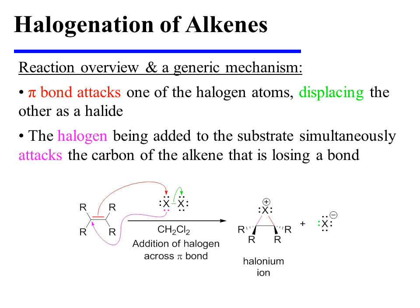Finally, the halogen being added to the substrate simultaneously attacks the carbon of the alkene that would otherwise lose a bond. This results in the formation of the halonium ion as a result of the new red and purple carbon to halogen bonds.